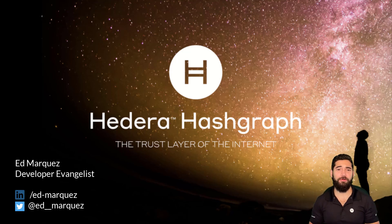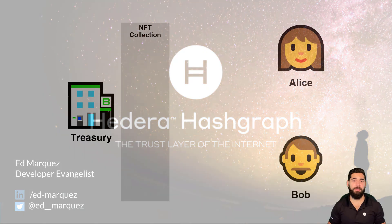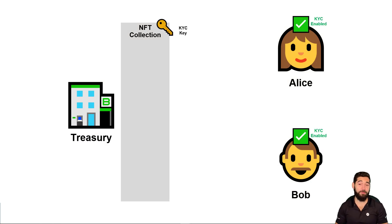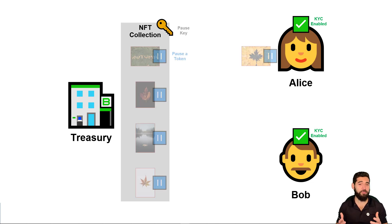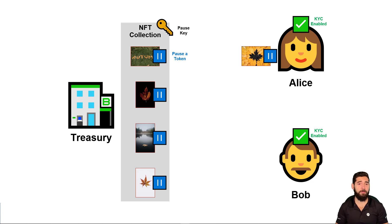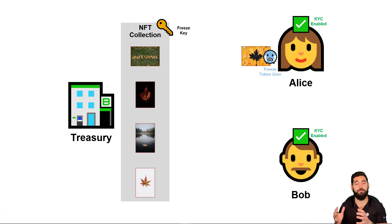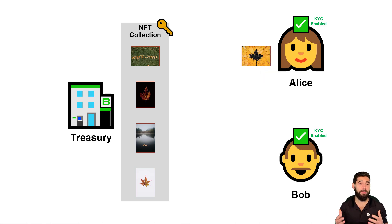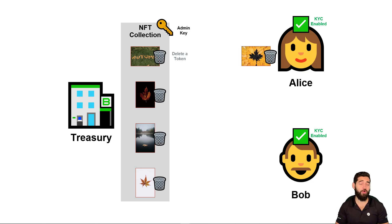Hey there, I'm Ed Marcus, a developer evangelist at Hedera. In the last video you saw how to enable KYC for users by specifying a KYC key for your token, how to update certain properties of your token when you have an admin key, and how to schedule transactions. Now you'll see how to pause all token operations if there is a pause key, how to freeze token operations for a specific user, wipe a user's balance if there is a wipe key, and how to delete a token if it has an admin key. We refer to this ability to make changes as controlled mutability, but with the Hedera token service you can also create immutable tokens if they don't have any of these keys.